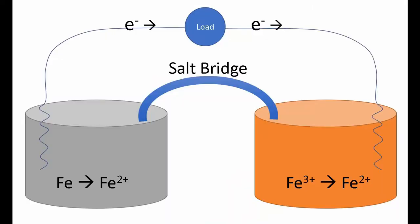So on the left side there, you have the anode side, and the iron is going to oxidize to Fe2+, releasing electrons which flow through the load. On the other side, you have the Fe3+ being reduced to Fe2+, accepting those electrons. And to balance the charge, you need a salt bridge.